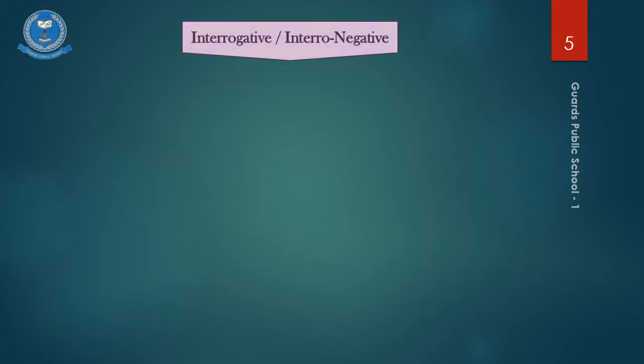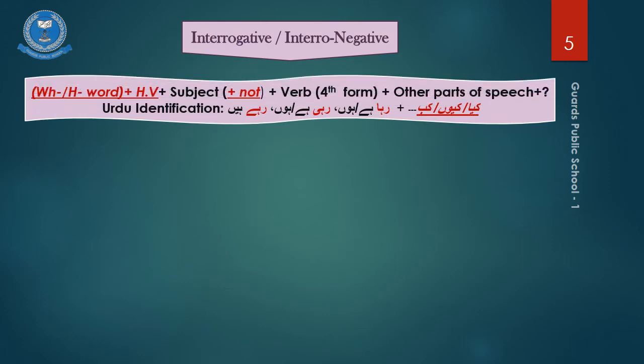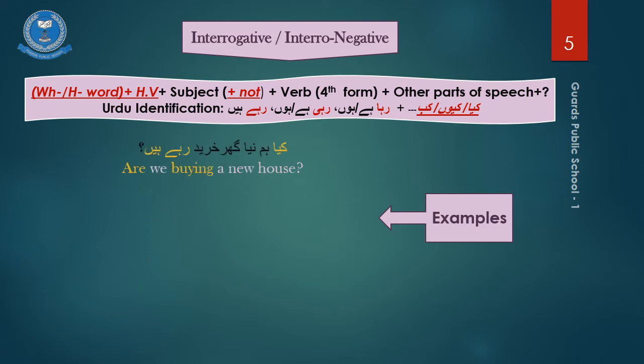For interrogative or intronegative form of the present continuous tense, as discussed earlier, it will have the identifiers of the given aspect and will also include the question words kya, kyi, kab, etc. in it. For example, kya hum neya ghar khariid rahe hai? Are we buying a new house? Example number two, yeh machine kaam kiyo nahi kar rahi hai? Why is this machine not working?